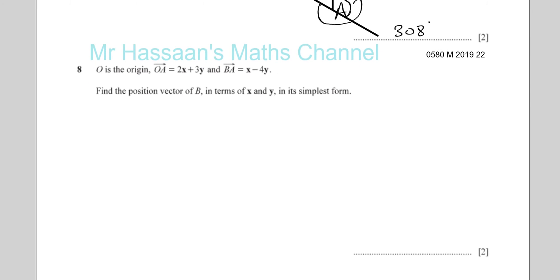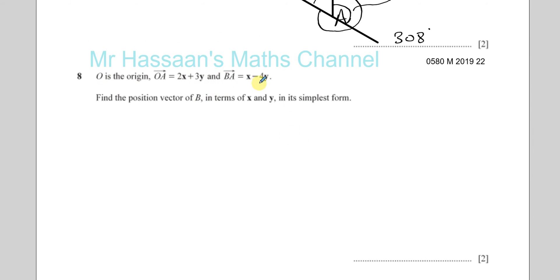Now we're going to get number 8. It says O is the origin. O to A is 2x plus 3y. And B to A is x minus 4y. Find the position vector of B. Now, first of all, the position vector of B means how to get from O to B. Whenever you see the word position vector, it means from O to that point. Now, x and y are two vectors. We don't know what they are. So I can just make a diagram to help me. That's O. Let's just say A is here and let's just say B is there. So what we know is O to A is 2x plus 3y, and B to A is x minus 4y.